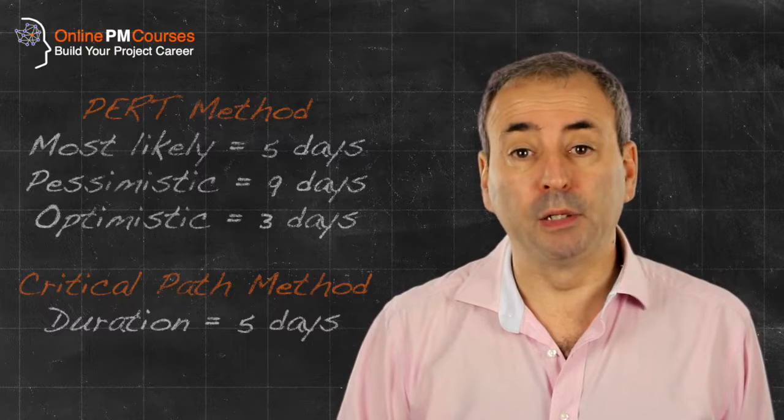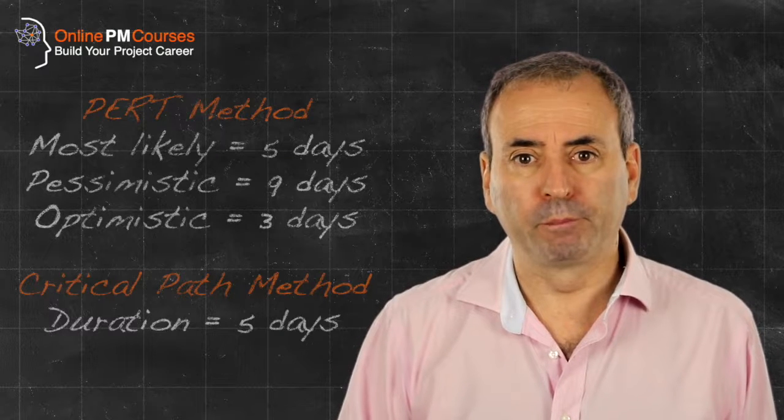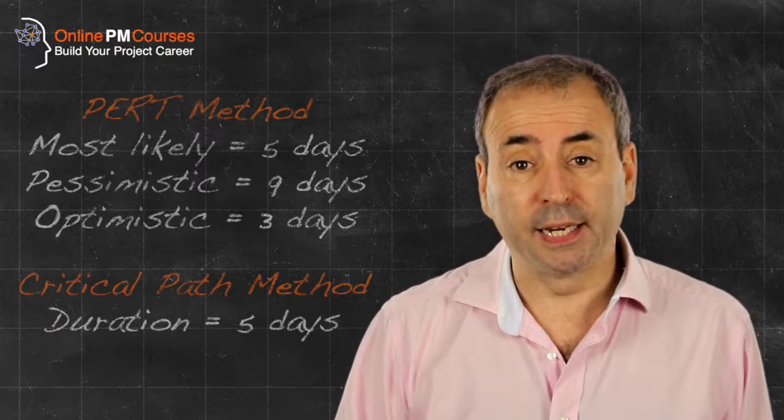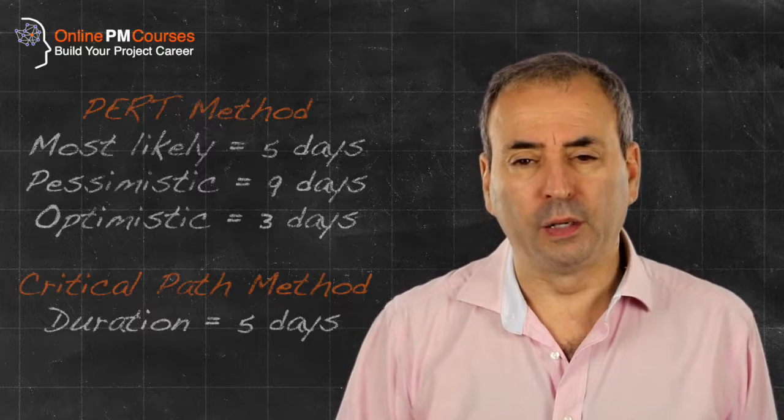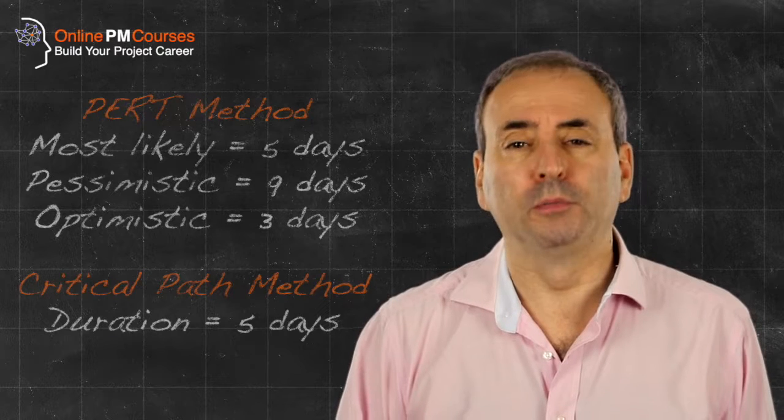The pessimistic estimate is the longest we think plausibly this task is likely to take, and the optimistic is the fastest we think we are likely to be able to do the task.